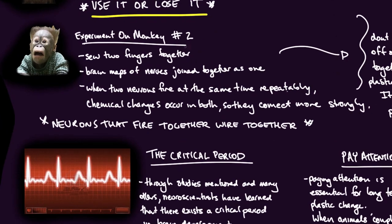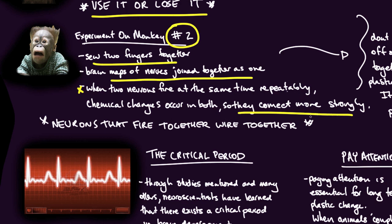Experiment on monkey number two: they sewed two fingers together, and what happened there was the brain maps of the nerves joined together as one. So what we could say is that when two neurons fire at the same time repeatedly, chemical changes occur in both so that they connect more strongly. And this is the mantra that neuroscientists use: neurons that fire together wire together.